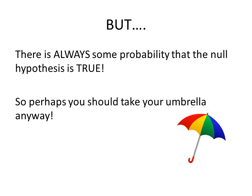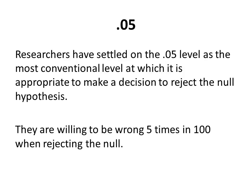When we look at .05, and let's talk about the last part of the statement — probability is less than .05 — that is 5 times out of 100. Researchers have settled on the .05 level as the most conventional level at which it is appropriate to make a decision to reject the null hypothesis. Remember, if we wait for certainty, we will never be able to make a decision. What we are saying by settling on .05 is that we as researchers are willing to be wrong 5 times in 100 when rejecting the null.